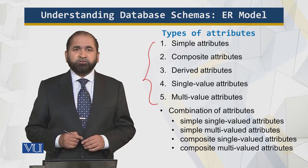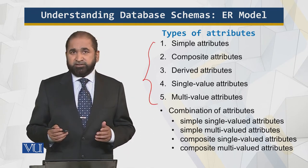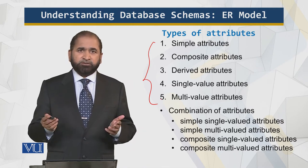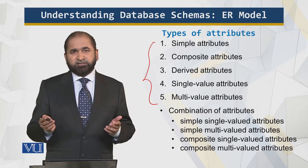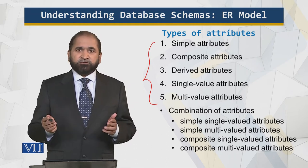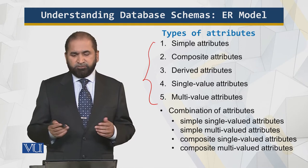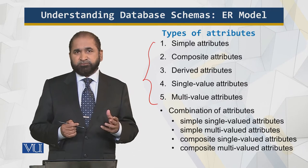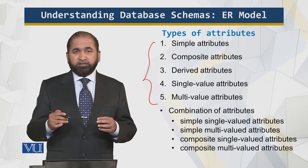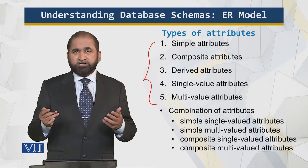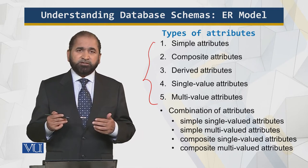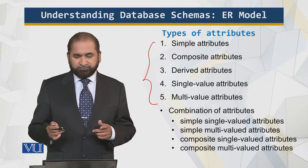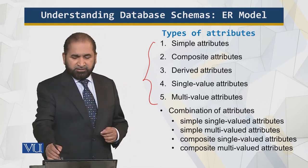Simple attributes are atomic — they cannot be broken down. For example, a telephone or mobile number, maybe 10 or 11 digits, cannot be broken further. That's the simple attribute. Composite attributes consist of multiple attributes — like a first name and a last name combined — because you cannot identify a person based on just the first name or just the last name alone.